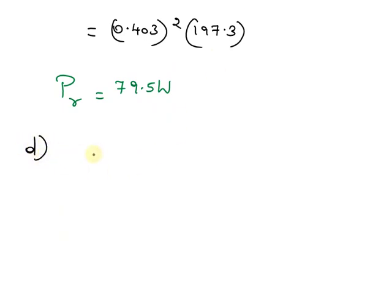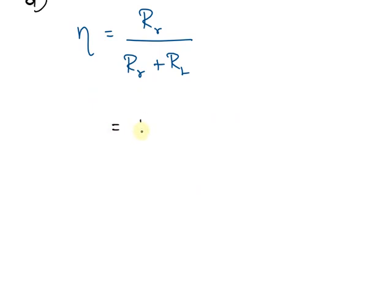we are going to find out the radiation efficiency by using the formula efficiency equals RR divided by RR plus RL. Here, we can substitute the values: 197.3 divided by 197.3 plus 0.625.